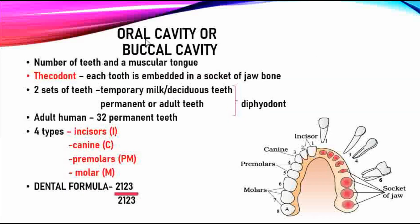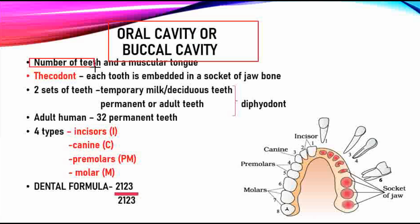First, we have the oral or buccal cavity. In the oral cavity, there are a number of teeth and a muscular tongue. Each tooth is embedded in a socket of the jaw bone — this arrangement is called thecodont. If you see the picture, each tooth is embedded in a socket in the jaw.